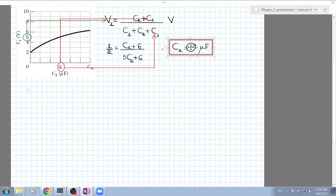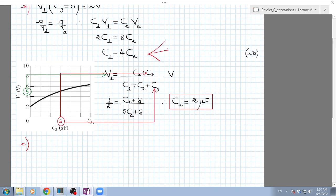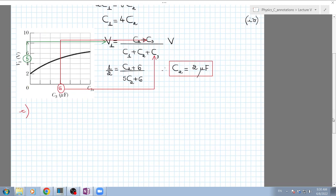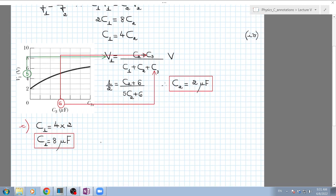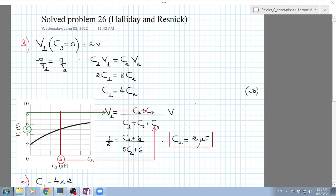Finally, I can calculate C1. C1 is going to be 4 times C2, which equals 8 microfarad. This is one example of how to use the concept of equivalent capacitance to calculate the unknowns in a circuit. I hope you liked it guys. Everything is in my lecture notes, very well explained.